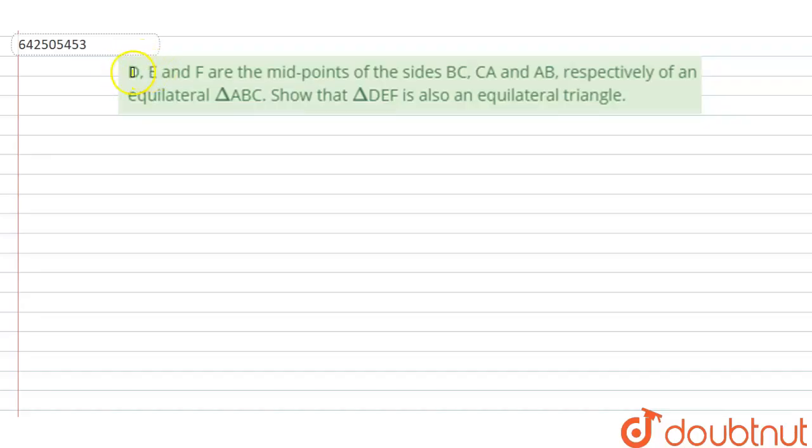The question says that D, E, and F are the midpoints of the sides BC, CA, and AB respectively of an equilateral triangle ABC. Show that triangle DEF is also an equilateral triangle.